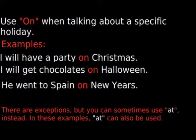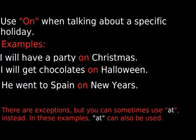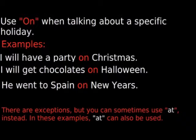Use 'on' when talking about a specific holiday. Some examples are: I will have a party on Christmas. I will get chocolates on Halloween. He went to Spain on New Year's. Now, there are exceptions — you can sometimes use 'at' instead. In these examples, 'at' can also be used.